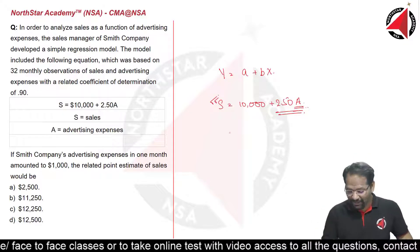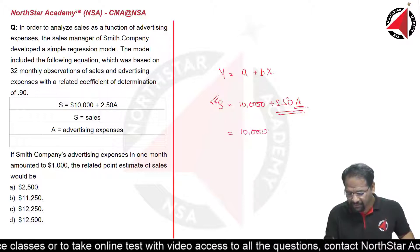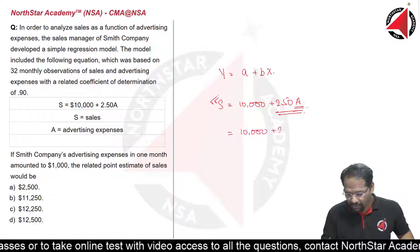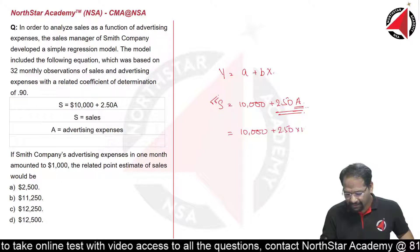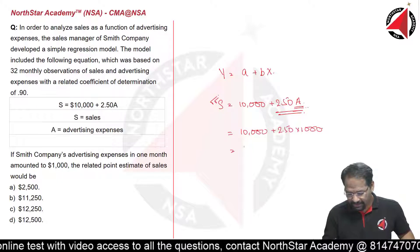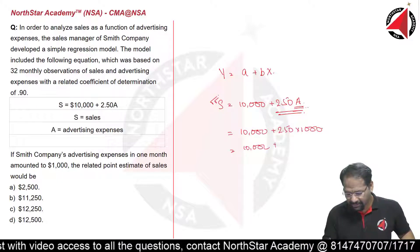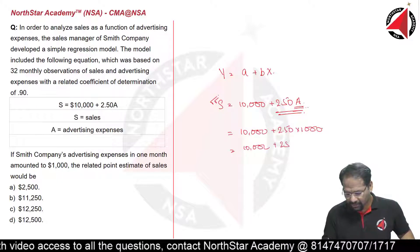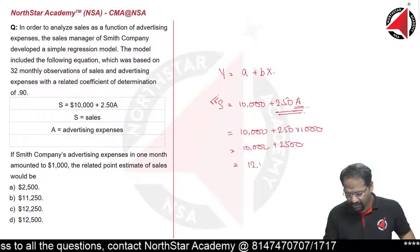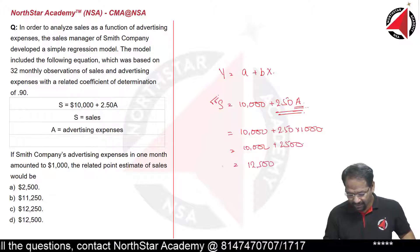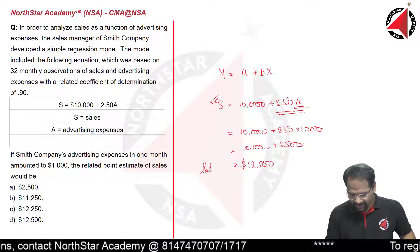Let's calculate by substituting values: 10,000 + 2.50 multiplied by 1,000. That gives us 10,000 plus 2,500. So the correct answer is $12,500, which would be our sales.